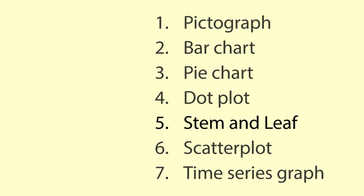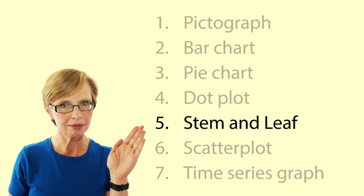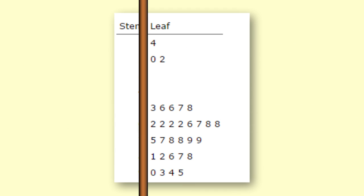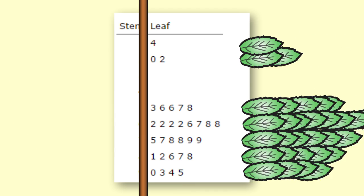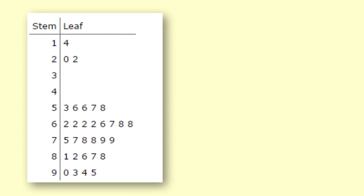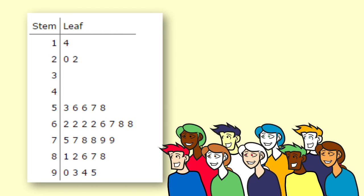Stem and leaf plots. Stem and leaf plots are great for getting a quick idea of the shape of the data. The stem is the first digit of the number, and the leaf is the second digit. This stem and leaf plot is of the grades a class of students got on a test out of 100. You can see that one person got 14, one person got 20, and one got 22.